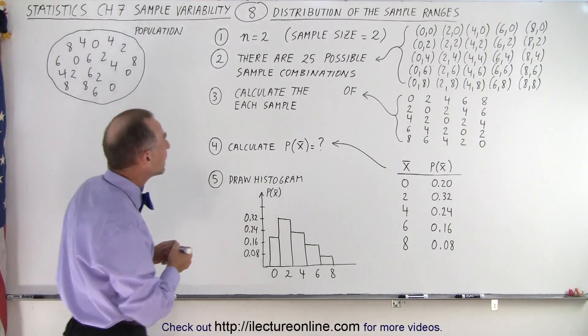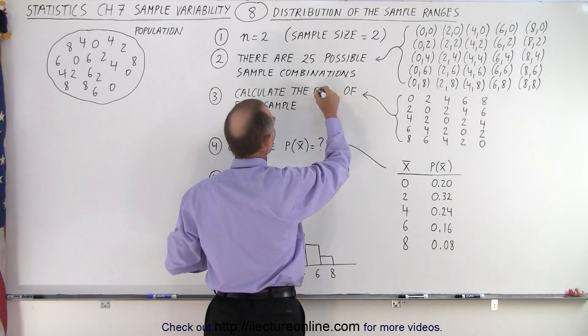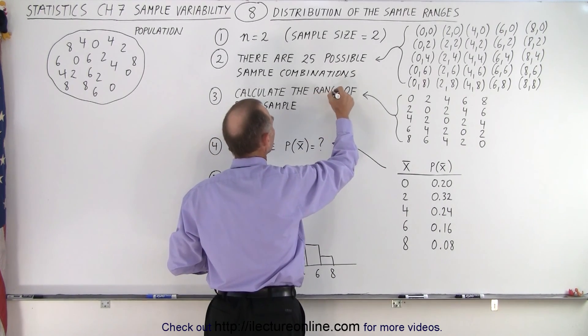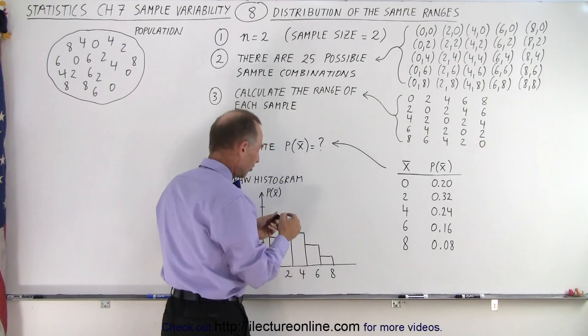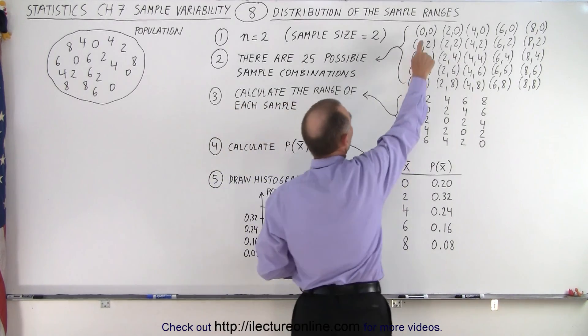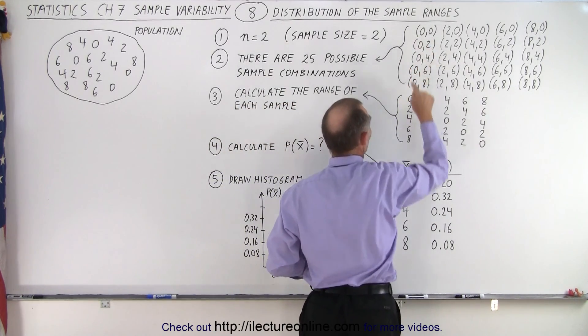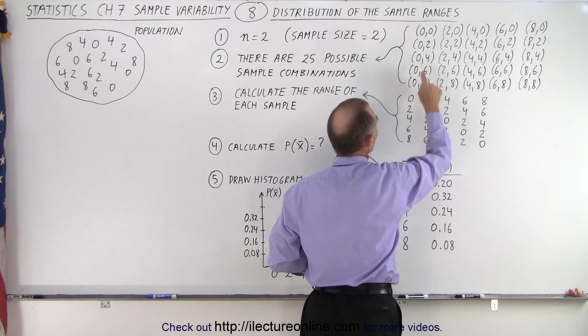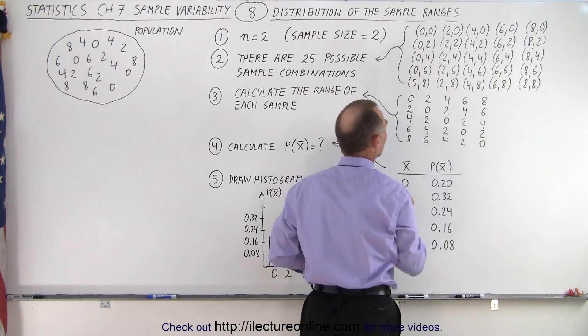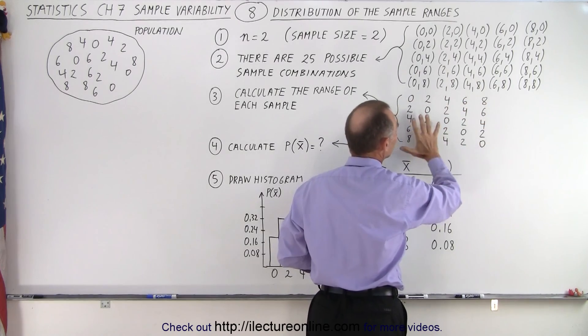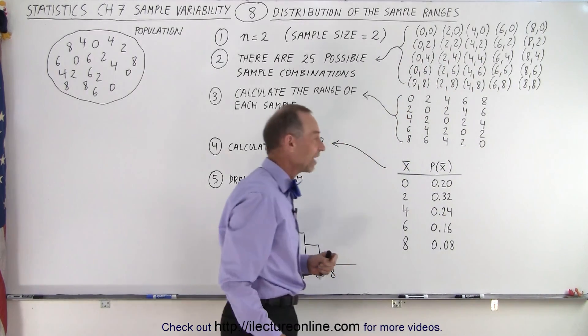We then calculate the range of each sample. Notice the range is simply the difference between the one number and the other number, so the range between those two is 0, the range between those two is 2, the range between those two is 4, and so forth. So we have all the ranges of all 25 samples.